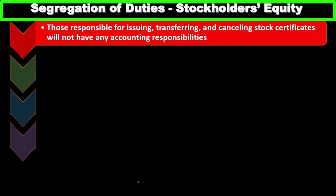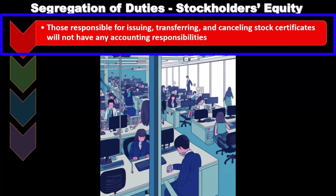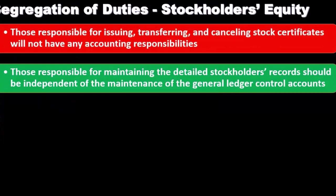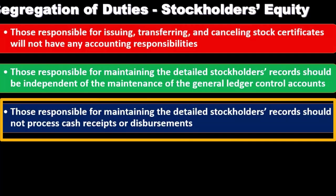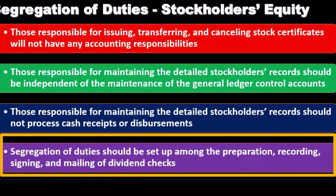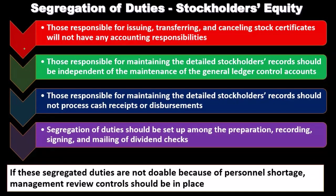Segregation of duties is a major internal control related to stockholders' equity. Those responsible for issuing, transferring, and canceling stock certificates should not have any accounting responsibility. Those responsible for maintaining detailed stockholders' records should be independent from the maintenance of general control accounts. Those maintaining detailed stockholders' records should not process cash receipts or disbursements. Segregation of duties should also be set among the preparation, recording, signing, and mailing of dividend checks.